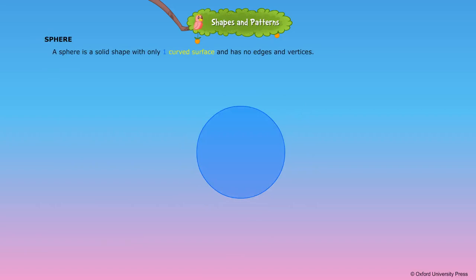Sphere. A sphere is a solid shape with only one curved surface and has no edges and vertices.